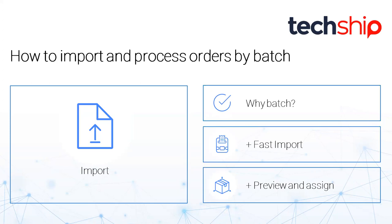Depending on how you have structured your printing areas and stations at the warehouse, you might be handling orders one by one at a packing line — which makes sense for orders that are different from each other. If it's unpredictable what you'd get on each order, it makes sense to weigh and dimension them individually. For example, if you have a client selling tech goods, someone might order one tablet, another might order a keyboard, a mouse, and a monitor, and others might order a laptop, headphones, and a printer. So every package might be different.